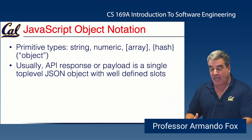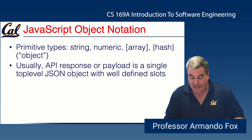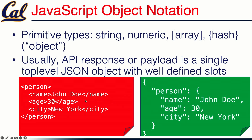Usually a response from an API call, or the payload you're providing as part of the call, will be a single top-level JSON object — a single dict — with well-defined slots. The API specification tells you which slots are necessary, which are optional, and which you should expect in a reply. In our earlier example, we showed a hypothetical microservice returning a hierarchical XML structure describing a person and their attributes. That same data structure in JSON would use only string and numeric types, with a single top-level object containing a single key, which is itself an embedded object with the other fields.